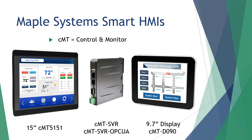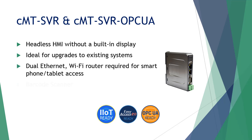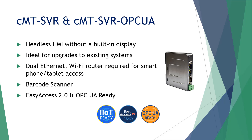Maple Systems offers multiple Smart HMI configurations to suit many different application needs. The CMTSVR is a versatile Smart HMI with all of the features associated with our Advanced HMI series, plus more. It is a headless HMI without a built-in display, perfect for systems where a local visual interface is not required, or an ideal cost-effective upgrade to existing systems. Our Smart HMIs feature dual Ethernet for segmenting your control and plant networks, and are designed to be connected to a Wi-Fi router for smartphone and tablet access. A feature unique to the Smart series when using an Android device is the ability to use the Android device's camera as a barcode scanner. The CMTSVR is EasyAccess 2.0 and OPC UA ready.